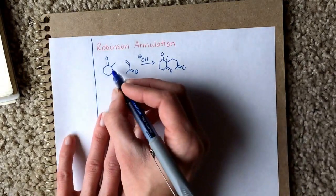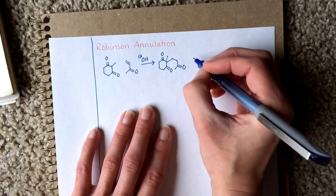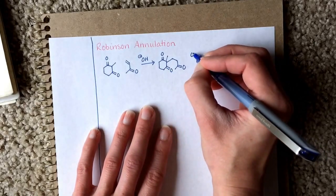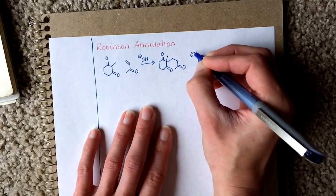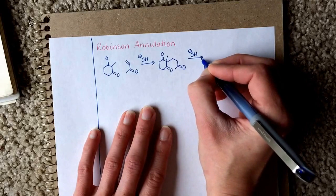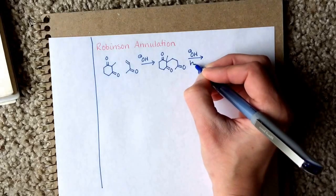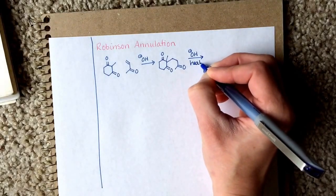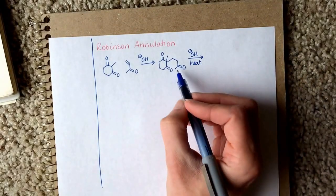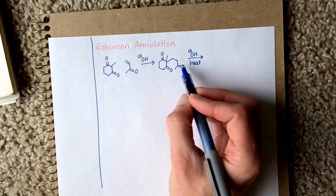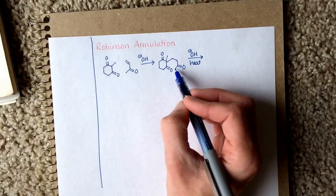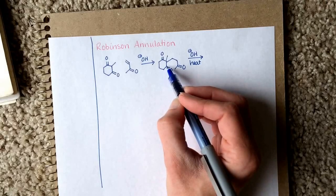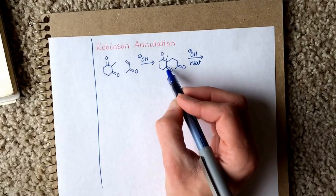That's the Michael reaction. Then we'll do an aldol reaction with condensation. For the aldol reaction, we're going to use a strong base to deprotonate this alpha position, and it will attack this site right here.